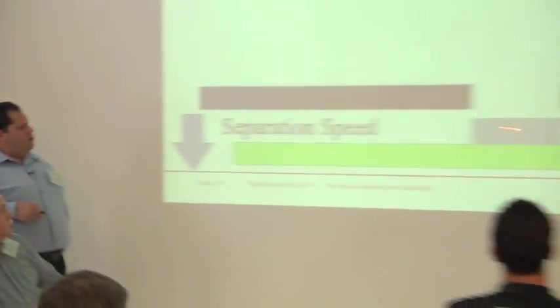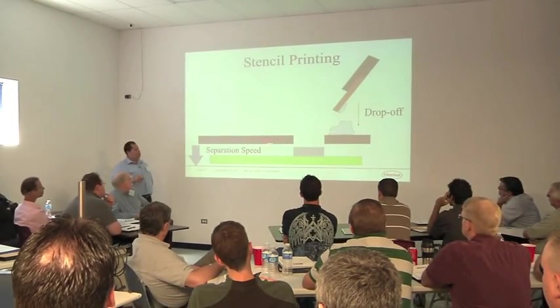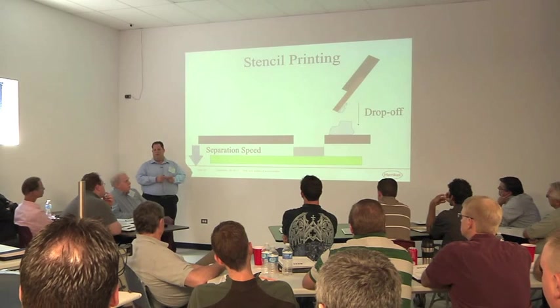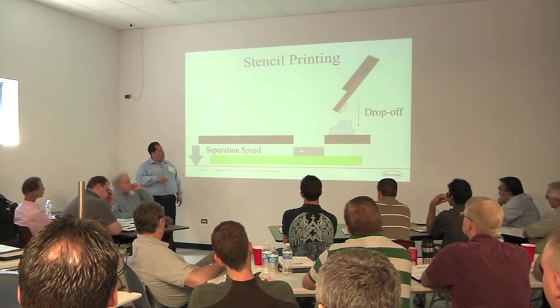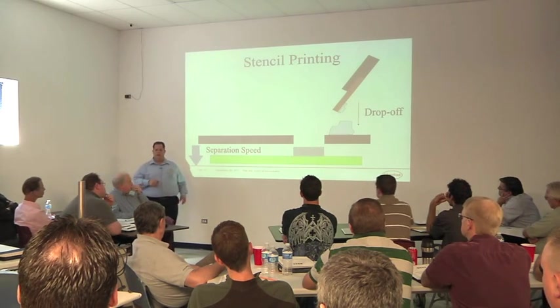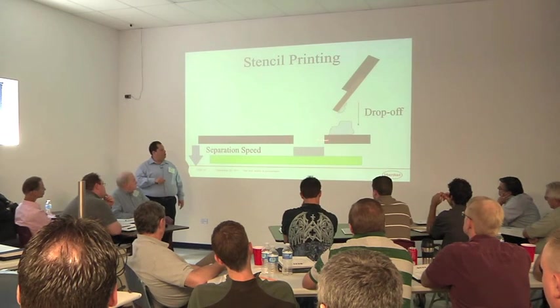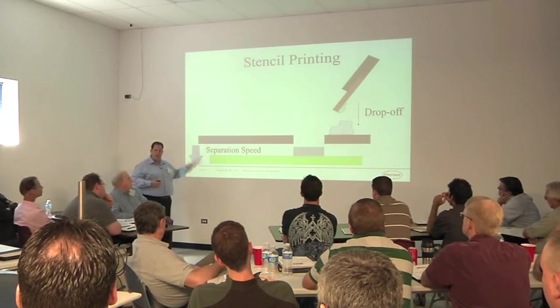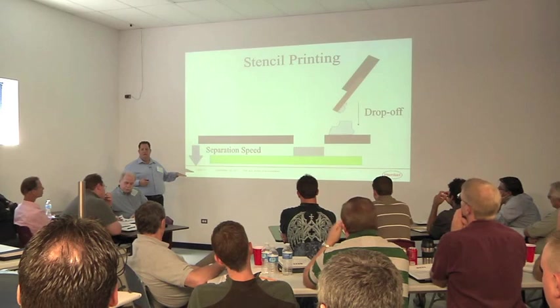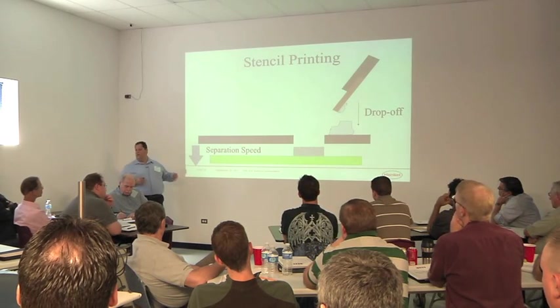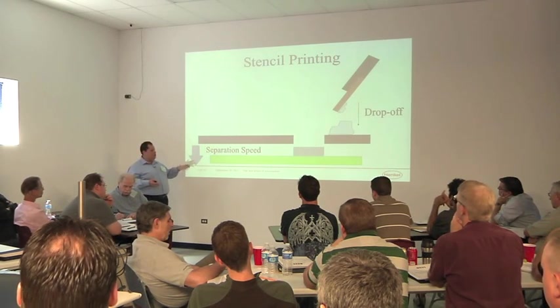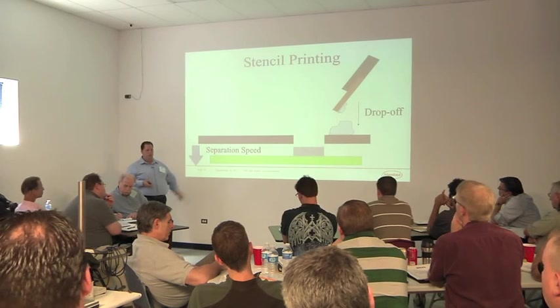Next thing we look at is drop off and separation speed. So when you separate, the reason why we have this stencil, why there's holes, those holes correspond to the deposit that we want on the circuit board. So the speed comes across, it drops, and then you pull down your board and you have a nice, happy little brick of paste. That should be exactly or very close to the image of what that hole is. So separation speed comes into play there. It's another way that we put shear force on that paste to get it to release. So if you quickly pull that board down, you get actually a little bit of a shear effect on the edges that helps it to release a little bit better. So it's something you can control in your process to give you a good release.